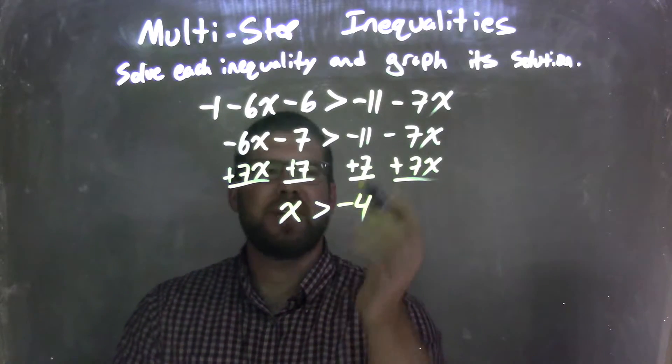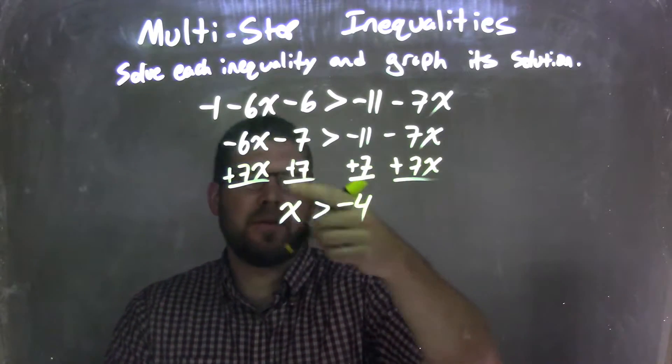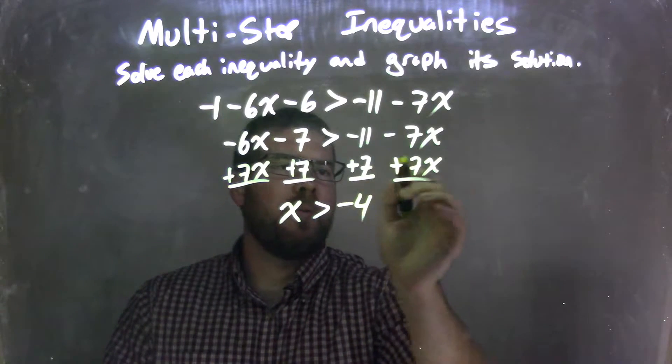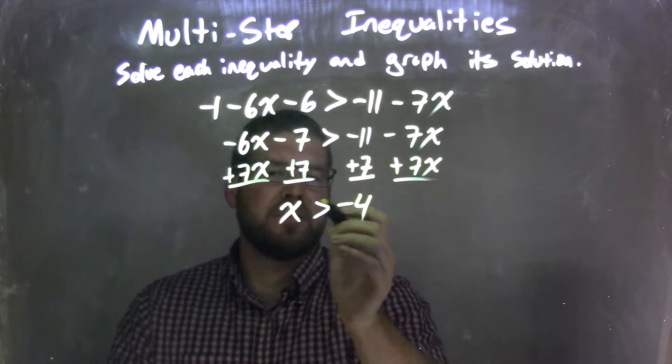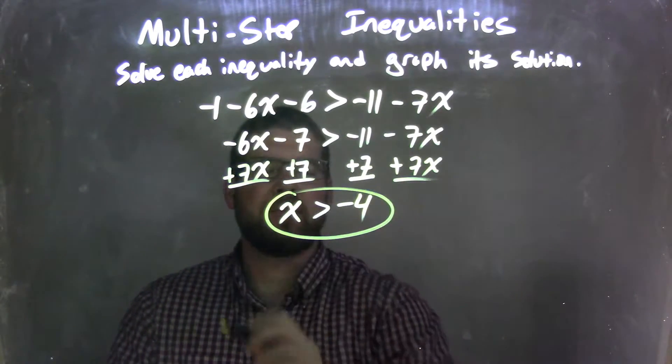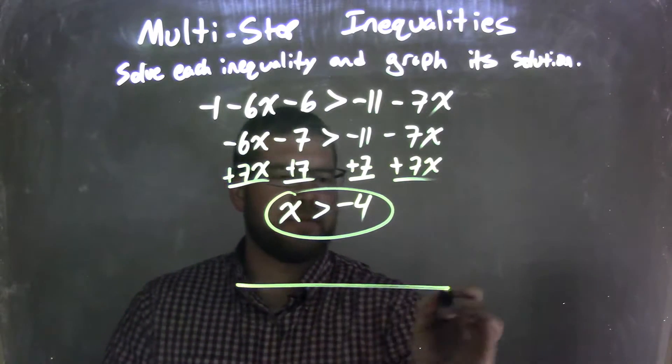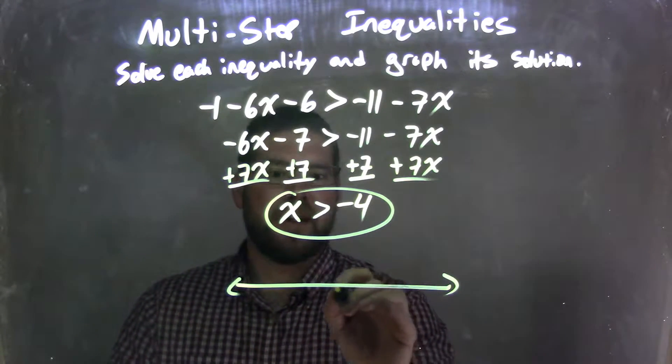So now we actually kind of did like two steps in one step. We have two parts, but make sure we lined up the right numbers and stuff. But we have x is greater than negative 4. So now I can graph this. So x is greater than negative 4.